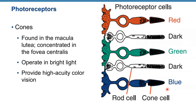The whole point of photoreceptors is to convert light energy into the electrical energy of action potentials that excite your brain cells so you can see. Those were rods. Cones are found in the macula lutea, concentrated in the fovea centralis. They operate in bright light and provide high-acuity color vision. We have three types of cones: red, green, and blue — activated by red, green, and blue light respectively.